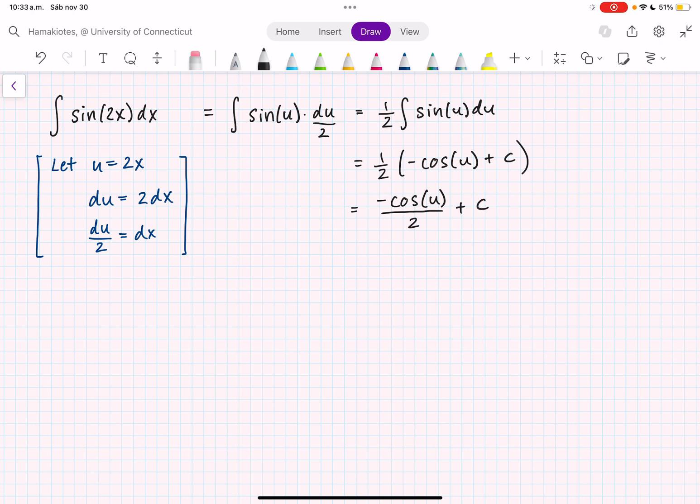Now don't forget to plug in what u is. So this is actually -cos(2x)/2 + c.